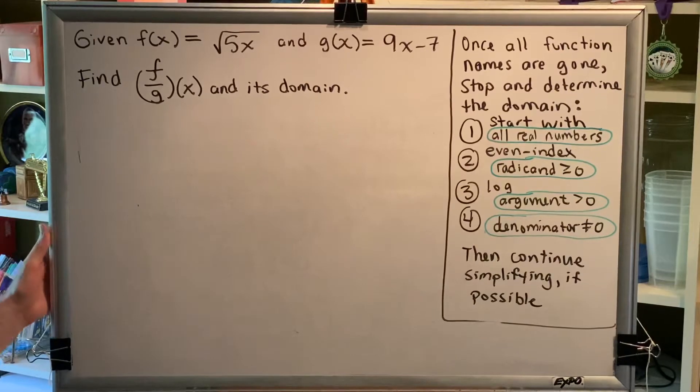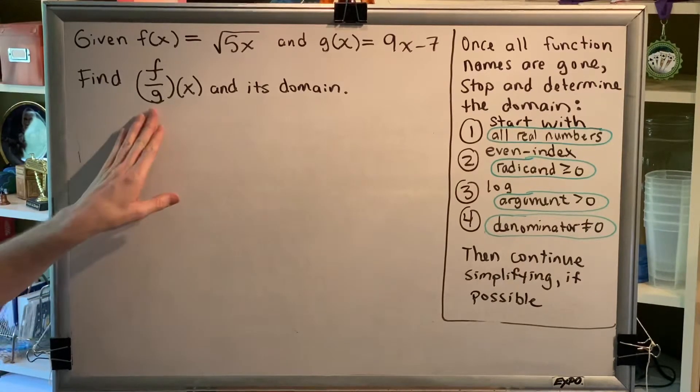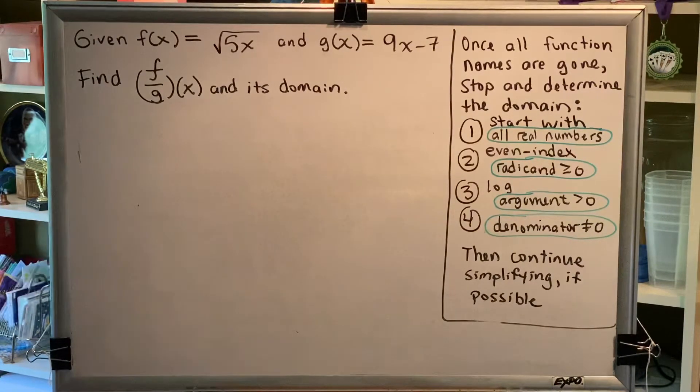Given f(x) equals the principal square root of 5x and g(x) equals 9x minus 7, find f over g of x and its domain.